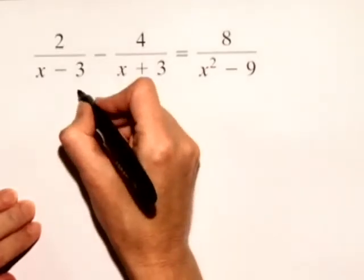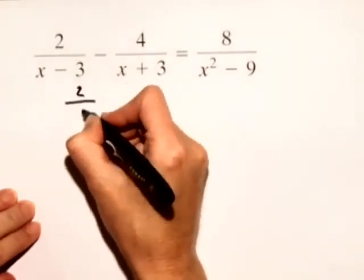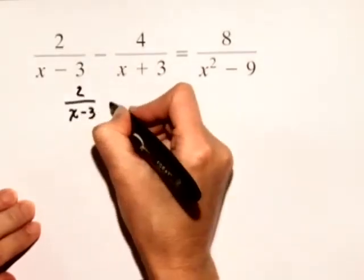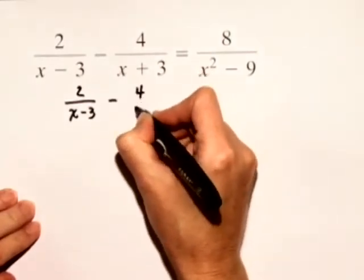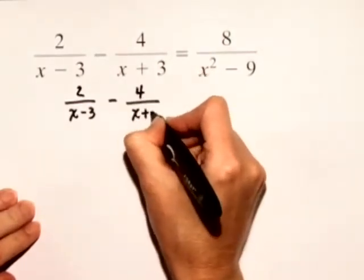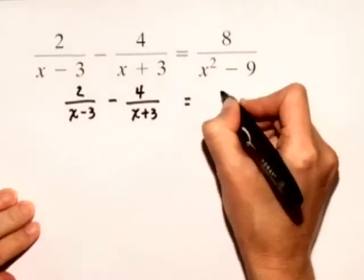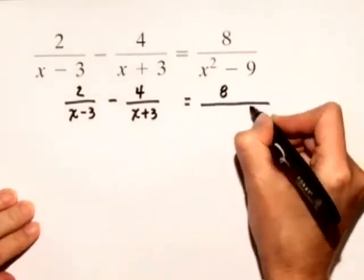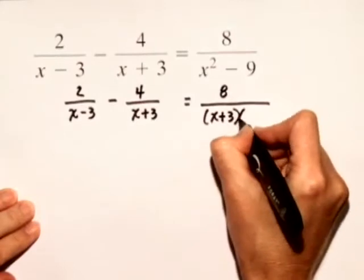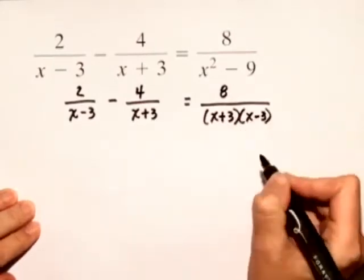So on the left hand side, we'll leave this alone. 2 over x minus 3, minus 4 over x plus 3, is equal to 8 over the quantity x plus 3 times x minus 3.